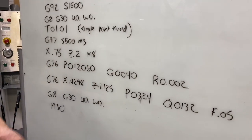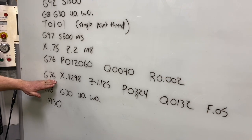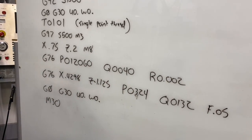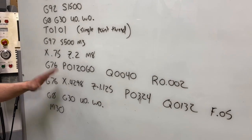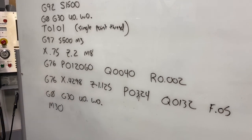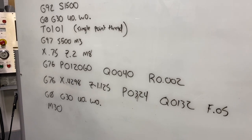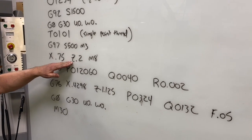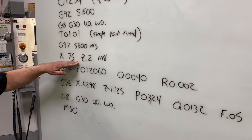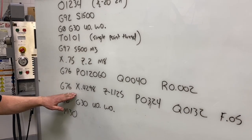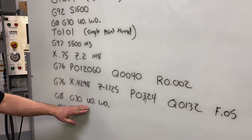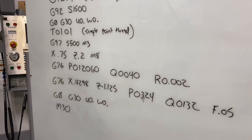The machine does all the rest — takes its first pass, makes six cuts through the thread, and always returns to exactly where it started when the canned cycle is finished, ending right back at X.75, Z.2. Then I send it back to its secondary reference point, end the program, and rewind. So let's go ahead and get this loaded on the machine and run through some threads.